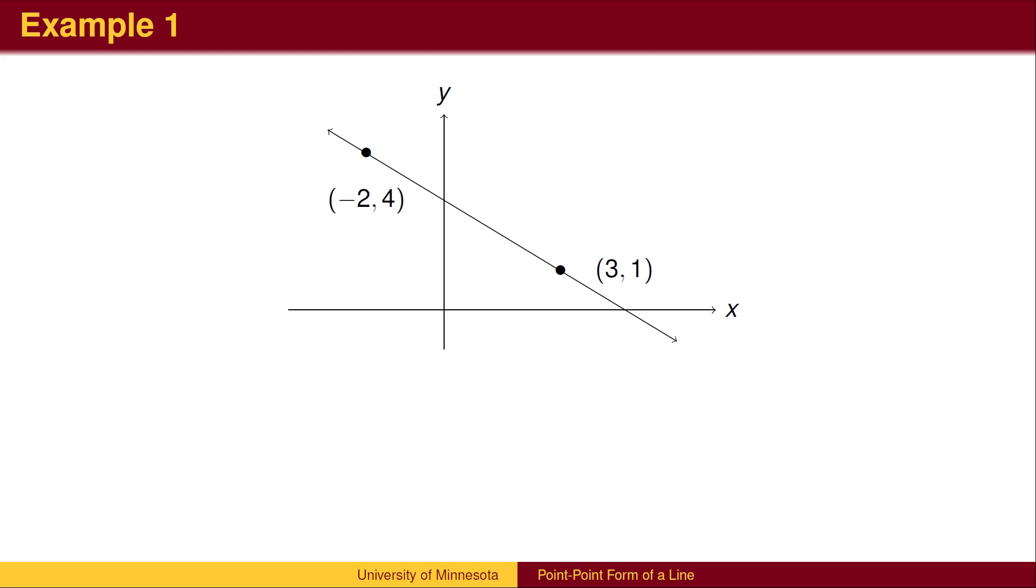Suppose we wish to find the equation of a line through the points negative 2, 4, and 3, 1. Given two points, we can use the slope formula to find the slope of the line.